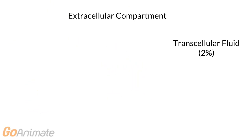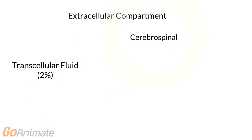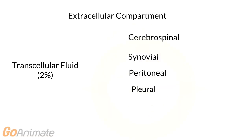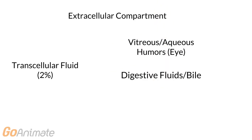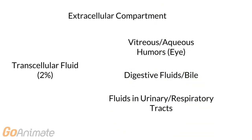Transcellular fluid includes the cerebrospinal, synovial, peritoneal, pleural and pericardial fluids, as well as the vitreous and aqueous humors of the eye, digestive fluids and bile, and fluids in the urinary and respiratory tracts.